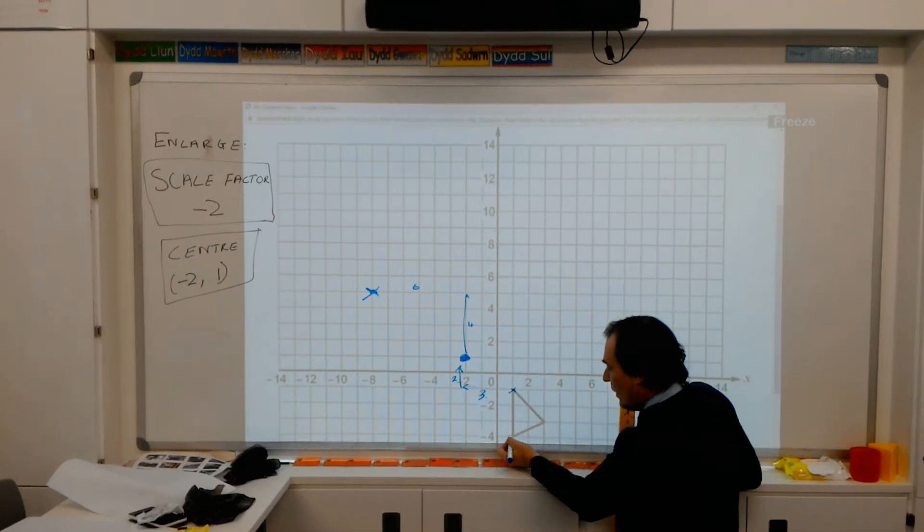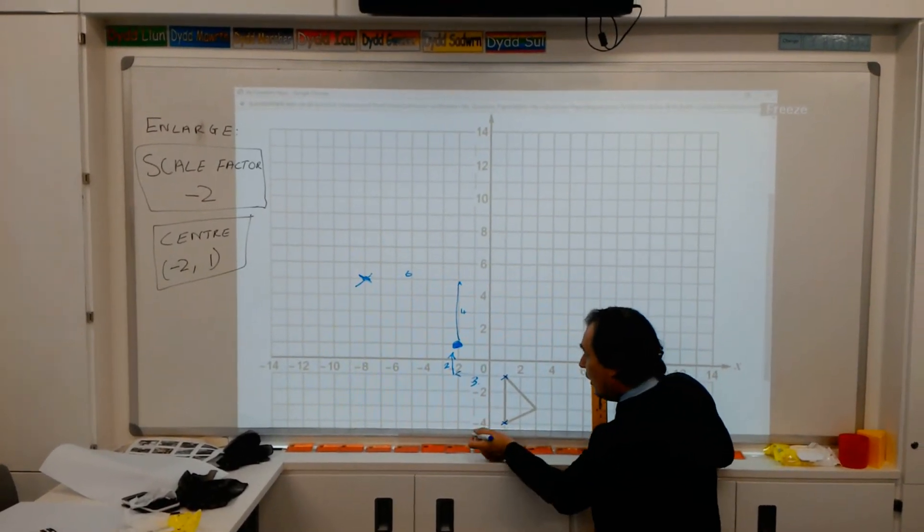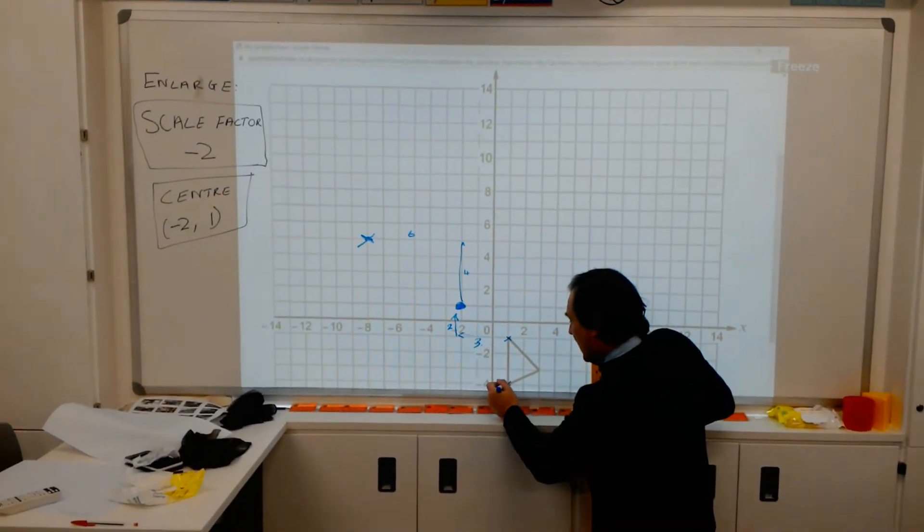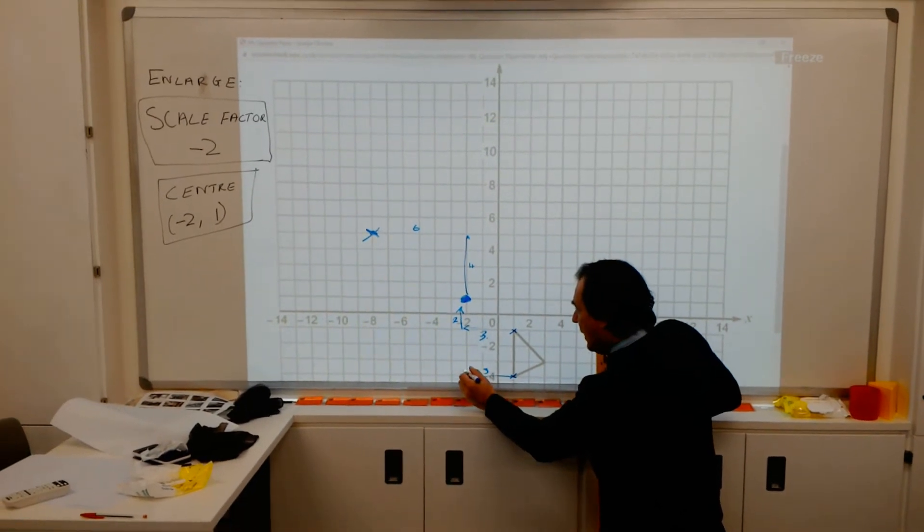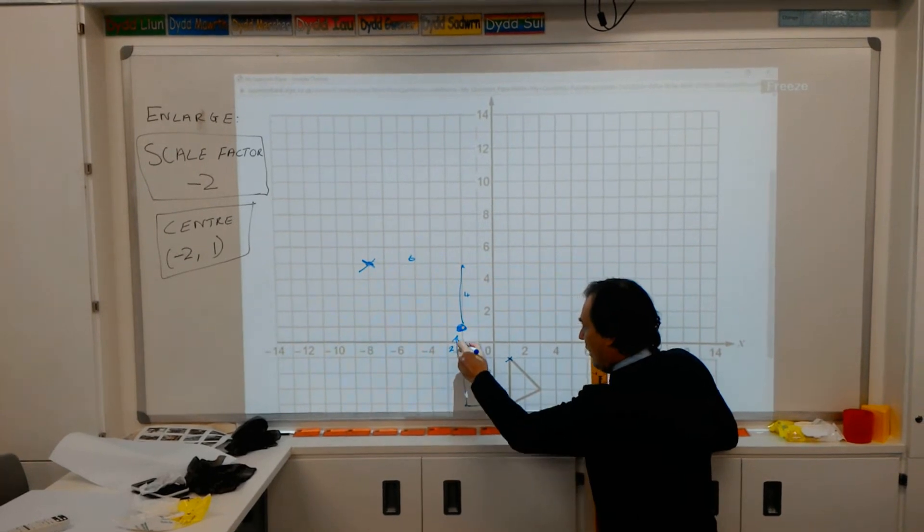Let's deal with the next one. So I'm going to use, let's use a cross again. Let's be imaginative. Right. So I've got to go along 1, 2, 3. Again, for 3. And then I'm going to be going up 1, 2, 3, 4, 5. So I'm going up 5.